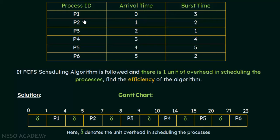At the 0th unit of time, P1 arrives. But since there is 1 unit of overhead in scheduling, the CPU cannot be assigned directly — there will be a delay of 1 unit of time. That is why we show this 'del' from time 0 to 1. Exactly at time 1, P1 gets the CPU for its execution. P1's burst time is 3 units of time, so it uses the CPU for 3 units. 1 plus 3 gives us 4, so the completion time of P1 is 4 units of time.